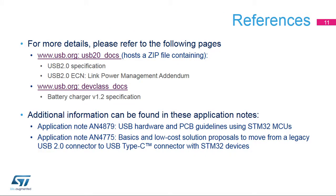For complete USB specification documents, please refer to usb.org. The USB 2.0 document home page has a zip file containing the USB 2.0 and OTG 2.0 specifications and an engineering change notice, or ECN, for link power management, or LPM. The USB device class documents page has the battery charger specifications. Additional information can be found in these application notes.